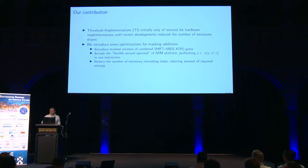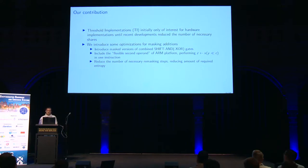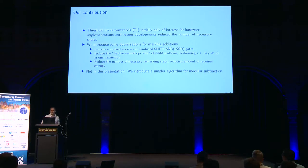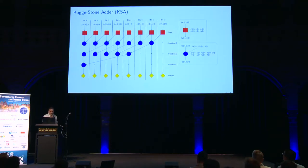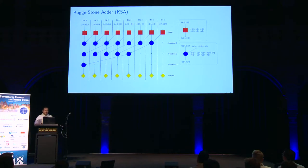We also introduce a method to reduce the number of necessary re-masking steps and reduce the amount of required entropy for their implementation. Additionally, we introduce a simpler algorithm for modular subtraction, which is needed by some ciphers like the SPECK cipher in the decryption step. As an additional algorithm, we use the Kogge-Stone adder, shown here as a simplified circuit diagram.